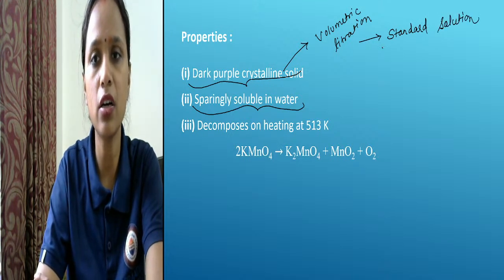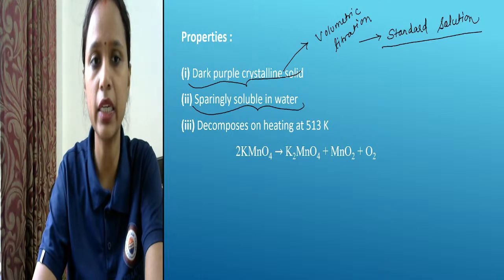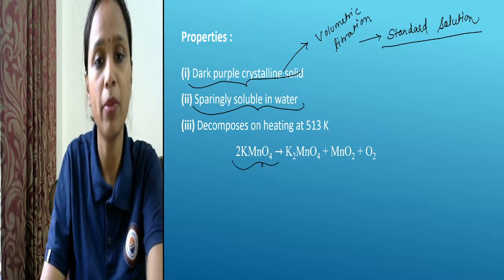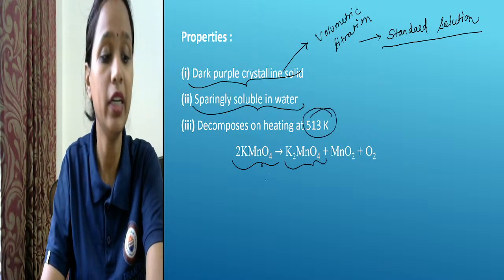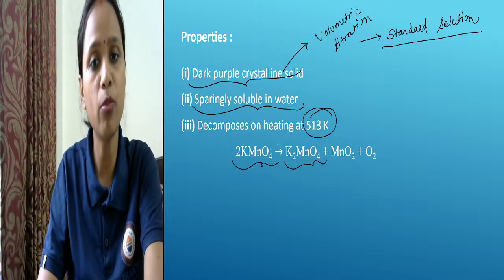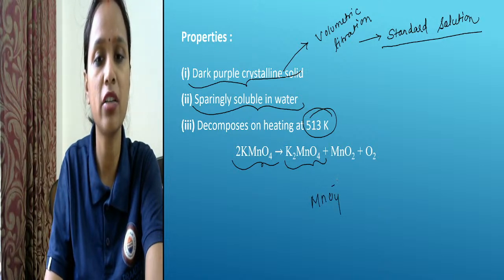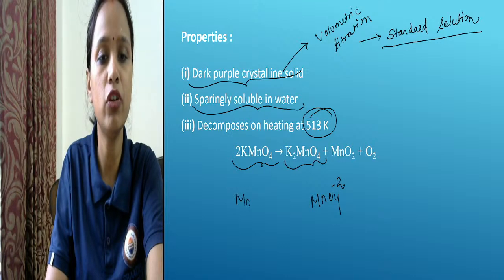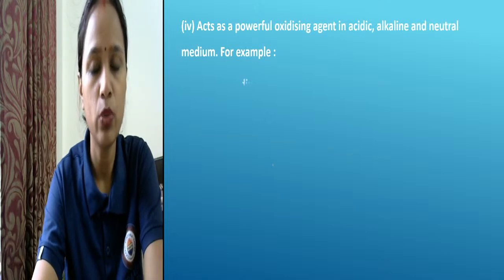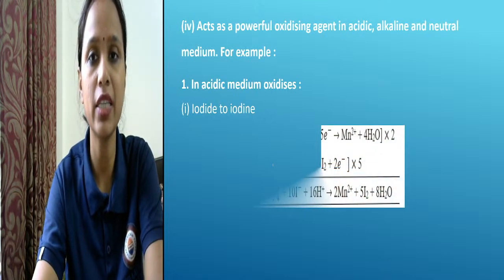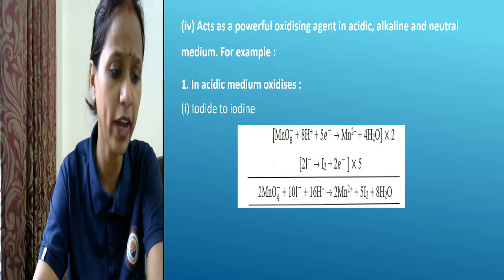It is sparingly soluble and decomposes to manganate at around 500 Kelvin on heating. So at approximately 500 K on applying heat, it decomposes. The manganate has a minus 2 charge. These are some properties. After this, potassium permanganate acts as a powerful oxidizing agent.